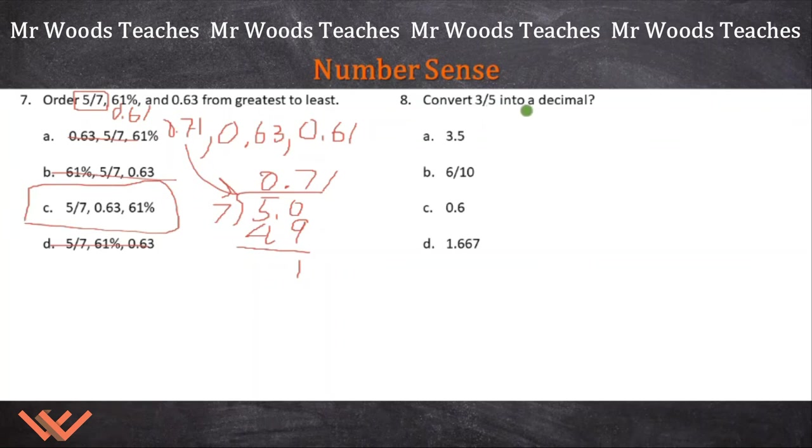Number eight, convert three fifths into a decimal. Well, if you remember, I have tens, ones, tenths, and then hundredths. Well, three fifths, I know that a tenth is 0.1, is a tenth. That is also equal to one over ten. That's one tenth. So I'm trying to get things into tenths. And I know that three fifths, and I can create an equivalent fraction, is equal to, and I want to make that into a tenth.